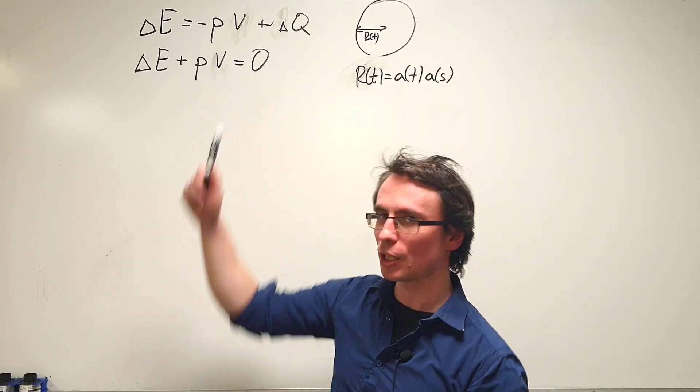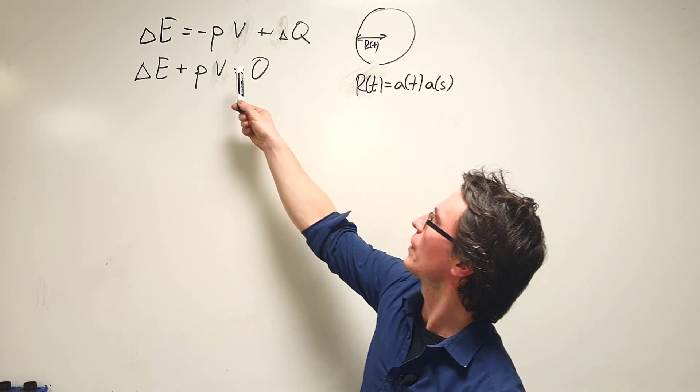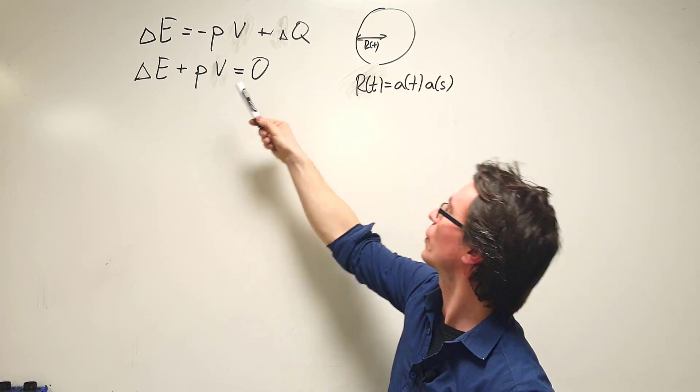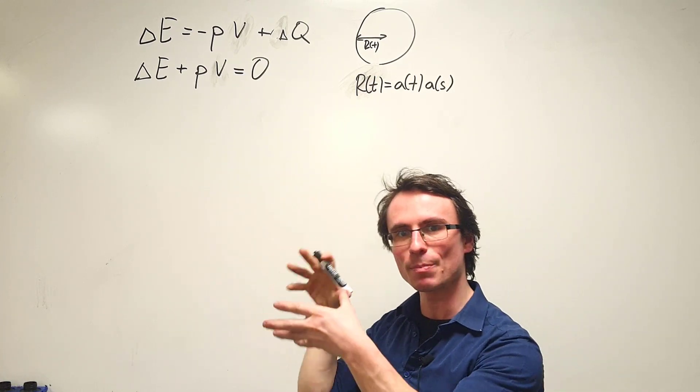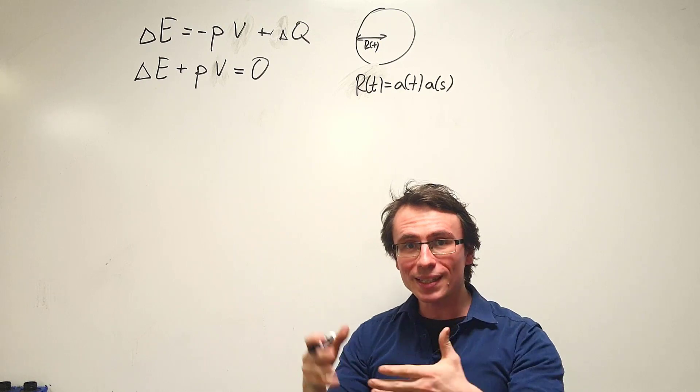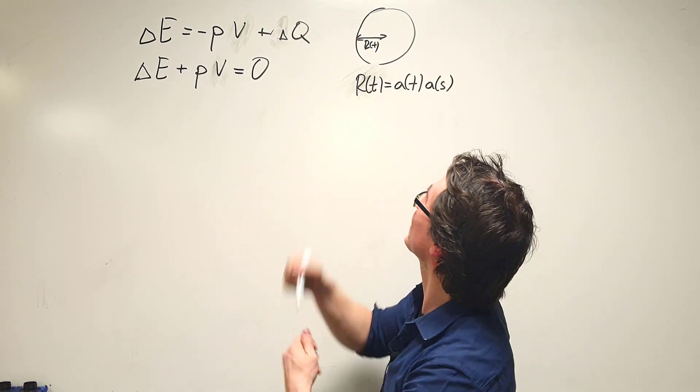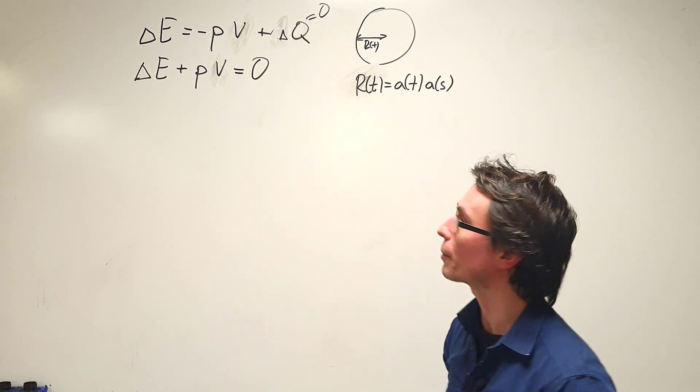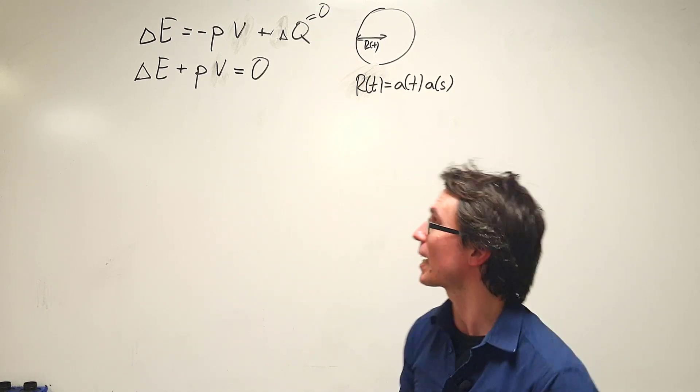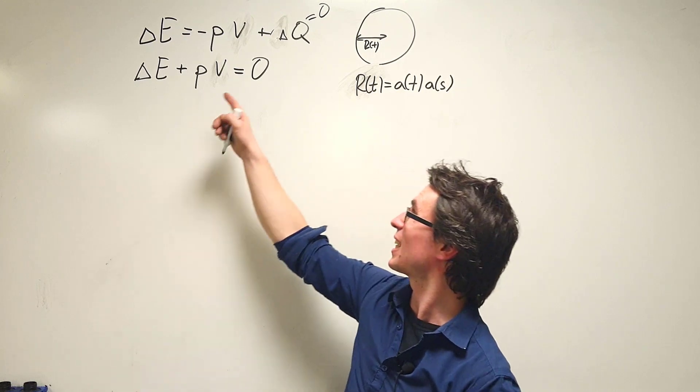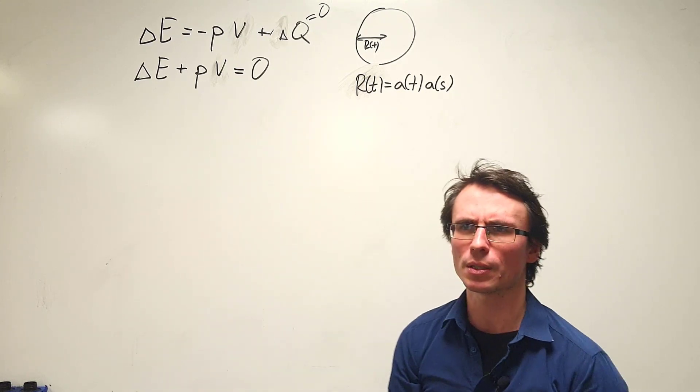The first law of thermodynamics says that the change of energy in a system is equal to the work done in a system plus the amount of energy inputted into the system. Because this is an adiabatic process, delta Q will be equal to 0, and our first law simplifies to delta E plus pV equals 0.